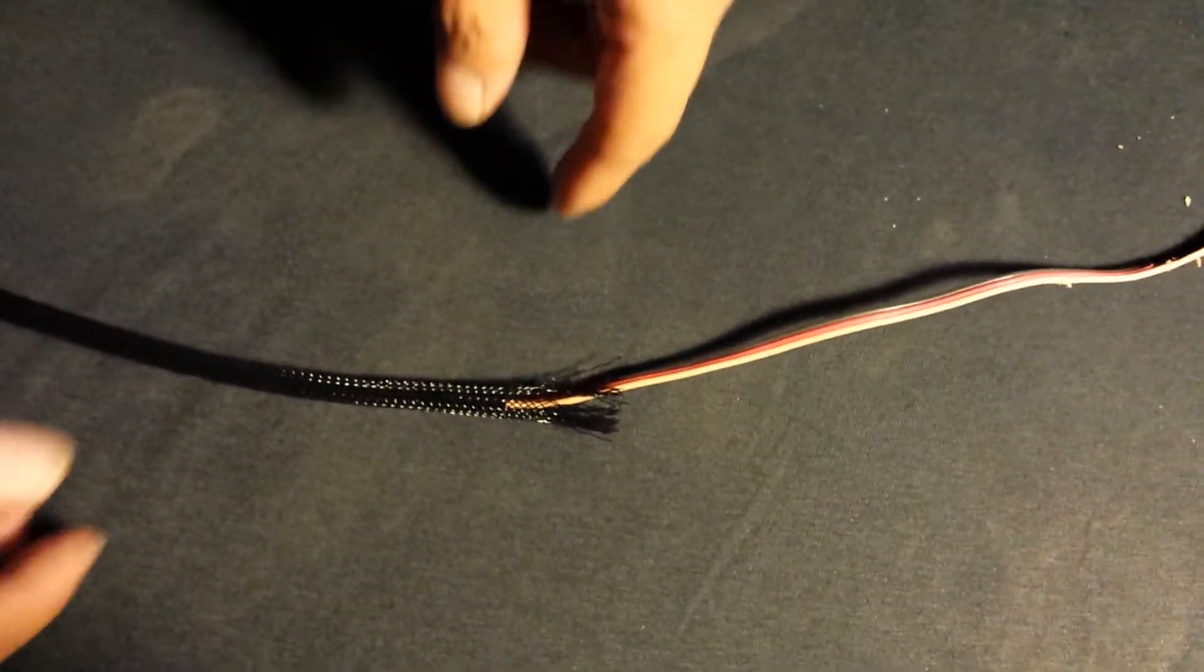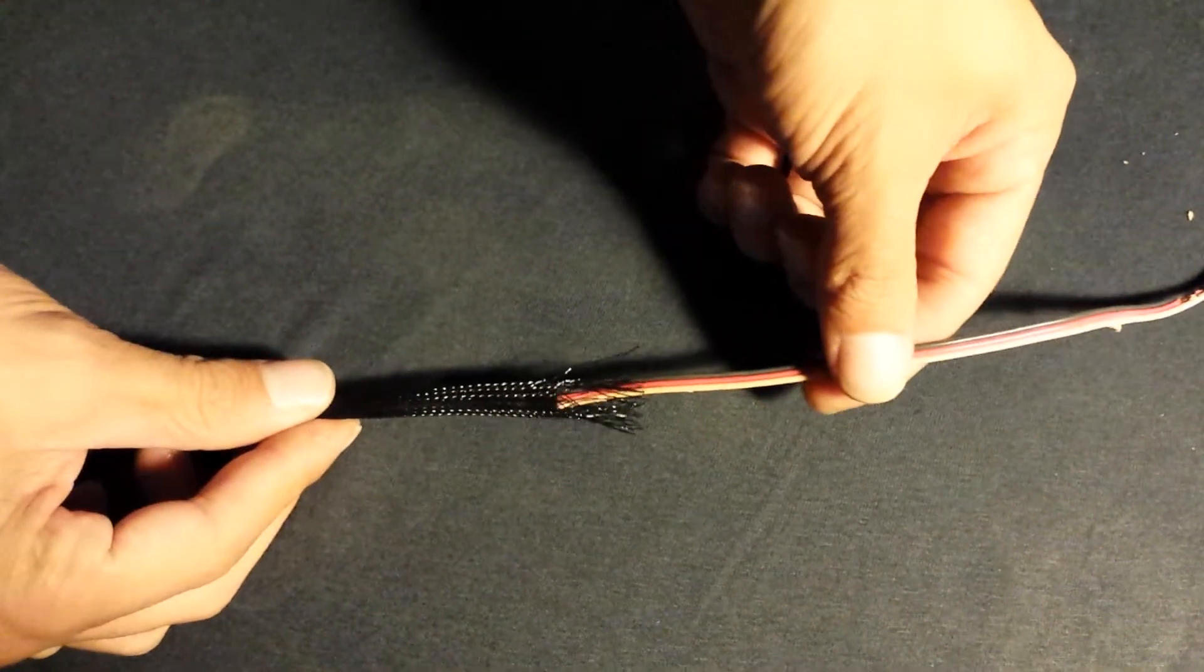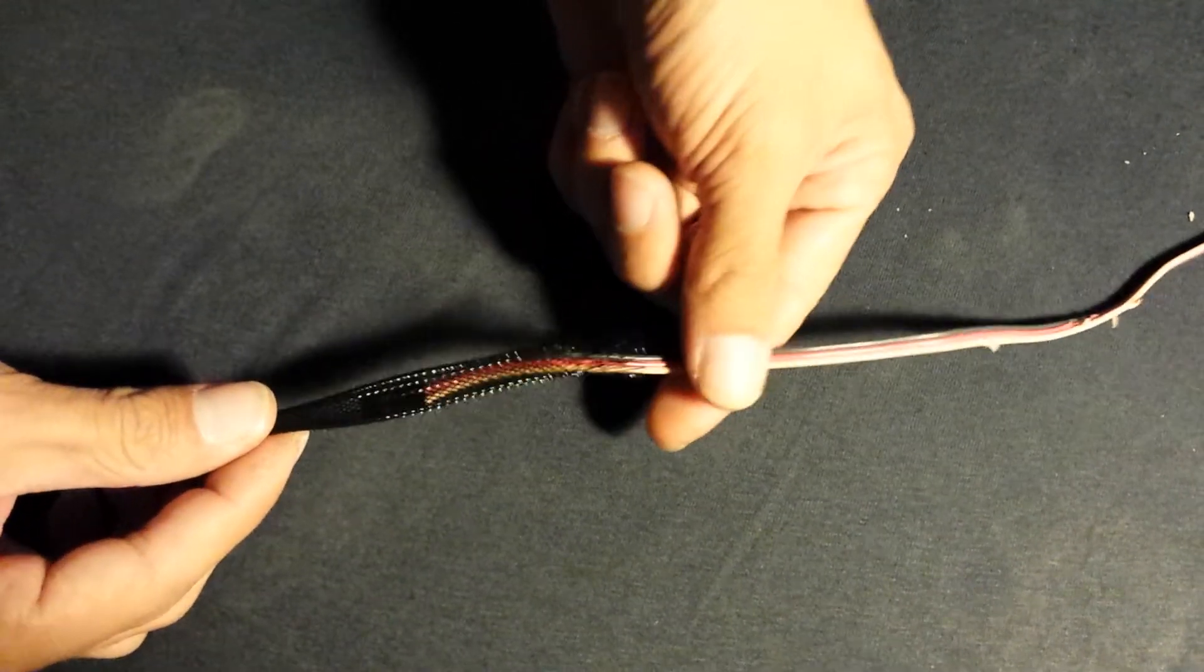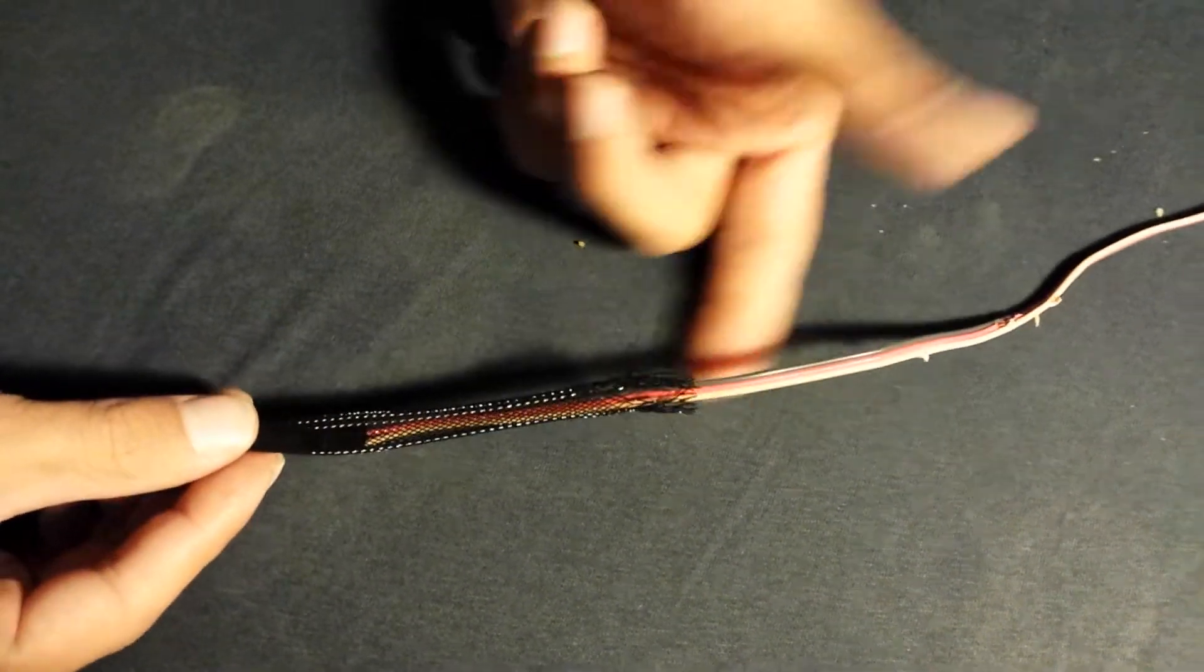Just a little video of how to install that snakeskin wire and your servo lead. So once you get it started, what you want to do is just get it down in there, you know, as far as you can go.